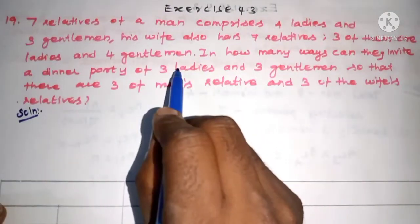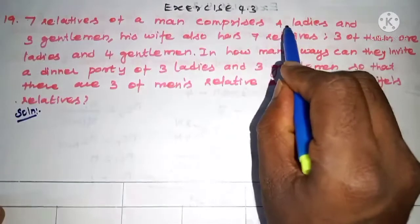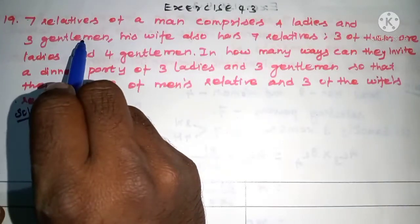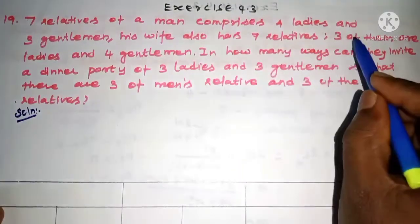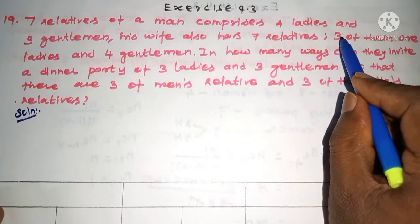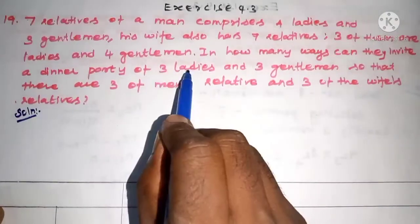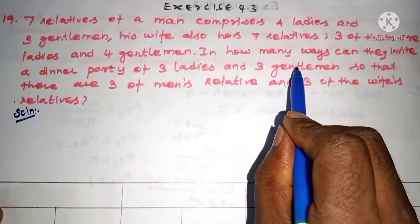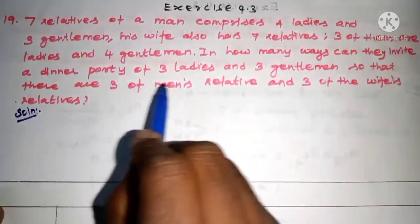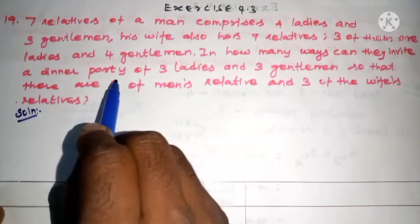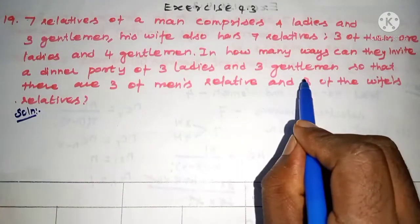In this dinner party, from the husband's side there are seven relatives: four ladies and three men. From the wife's side there are seven relatives: three ladies and four men. In this dinner party, three ladies and three men are to be invited, with three from the men's side and three from the wife's side.